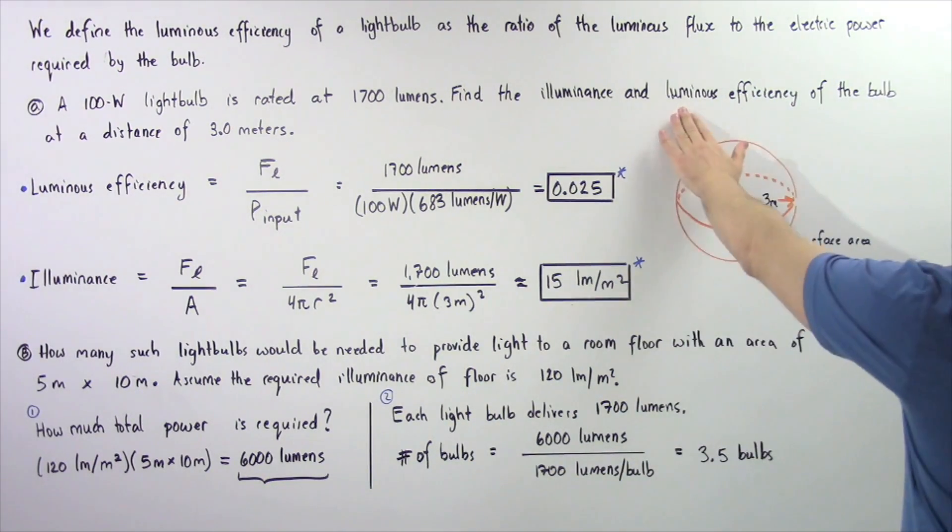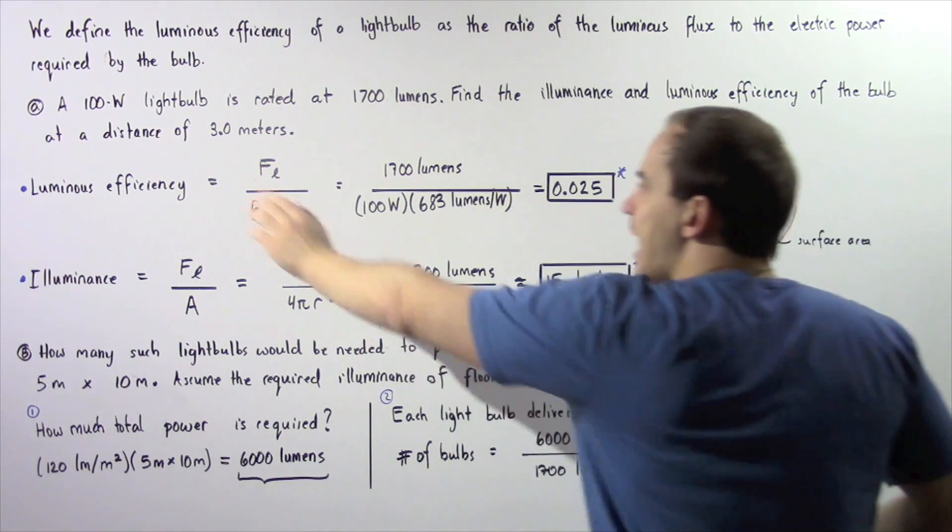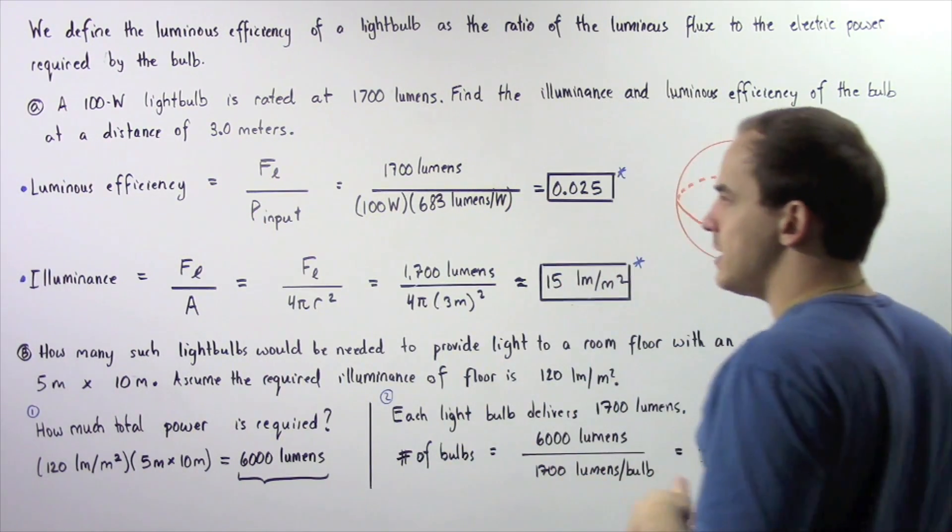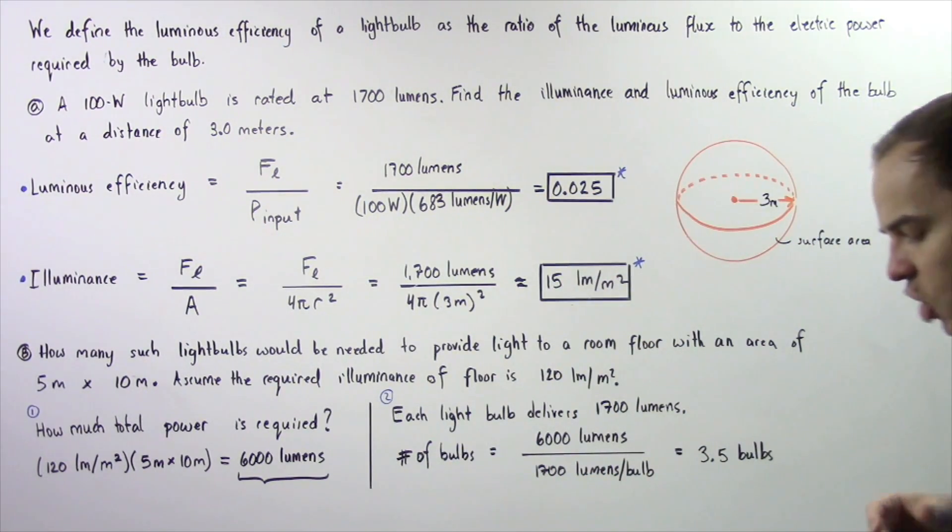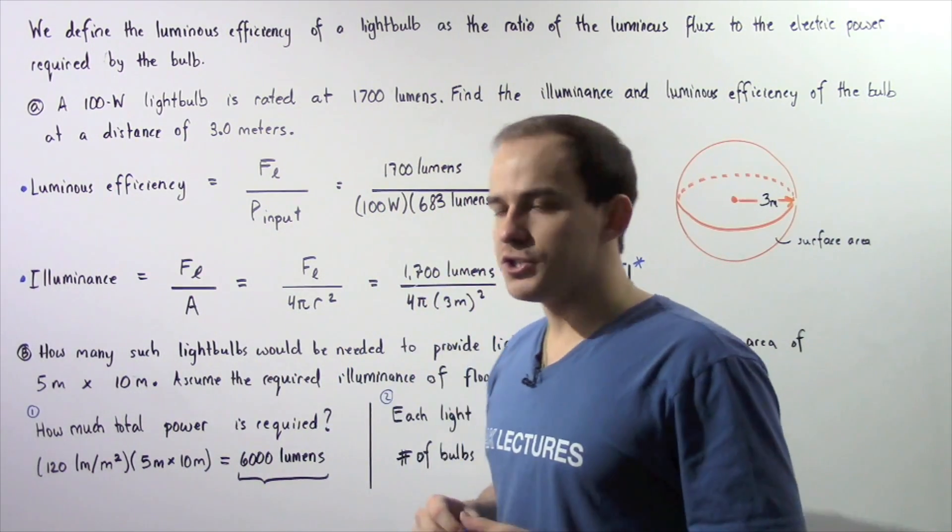We want to find the luminous efficiency and the illuminance of the bulb at a distance of three meters away. So let's begin by calculating the luminous efficiency.